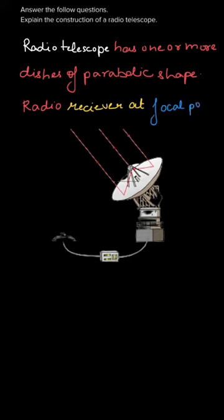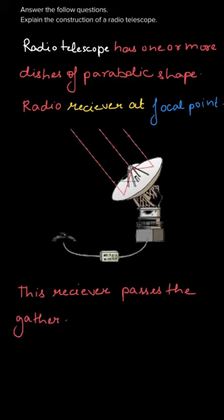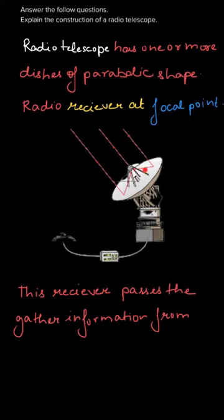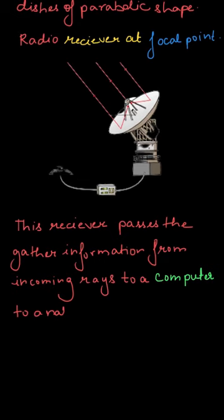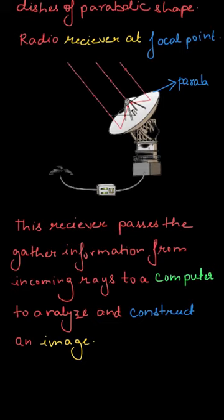The receiver is at the focal point and it receives the information. We can see that the radio receiver is at the focal point. This point is the antenna where the incoming rays arrive, and this is passed through the receiver, which gathers this information. The information is then moved forward to the computer for image processing. So the receiver gathers the incoming information and transfers it to a computer to analyze and construct an image.